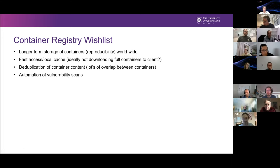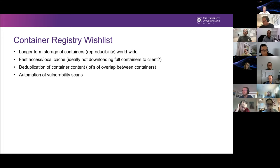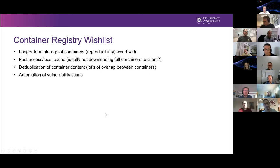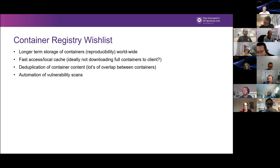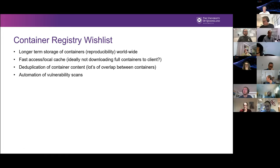We also want deduplication of container content because a lot of our containers have overlap. By just updating a container, we usually change a couple of binaries, but it's still a 15 gigabyte image — we can't keep storing that. Also, a lot of the software we use is quite outdated, so we'd like to work on automated vulnerability scanning so we understand what problematic software is in old containers. We'd also like to limit what containers can do on data — only give them access to what they actually need, so we're not accidentally stealing data.